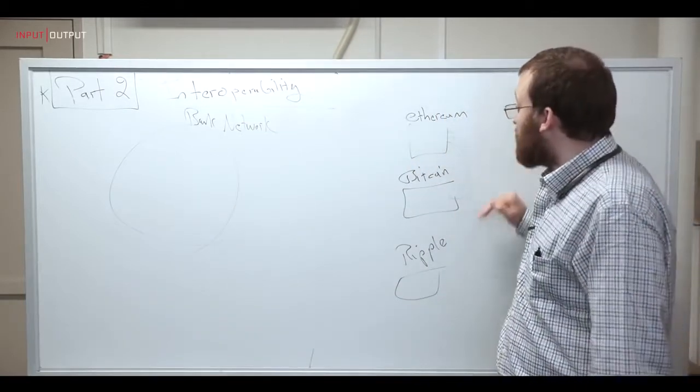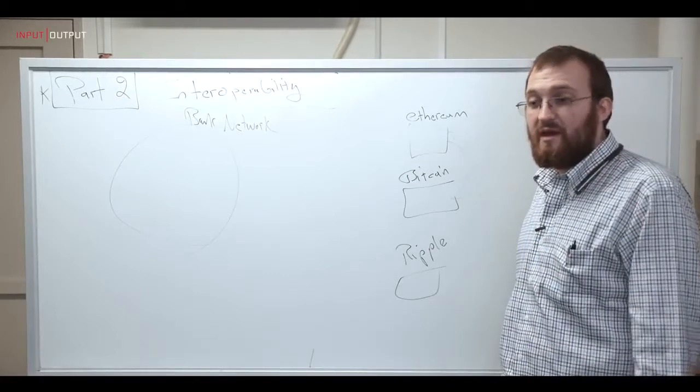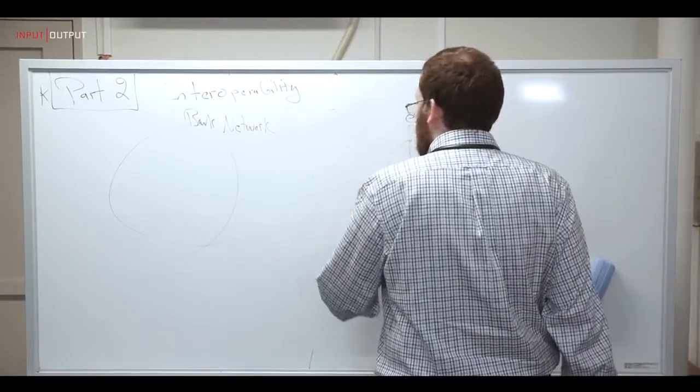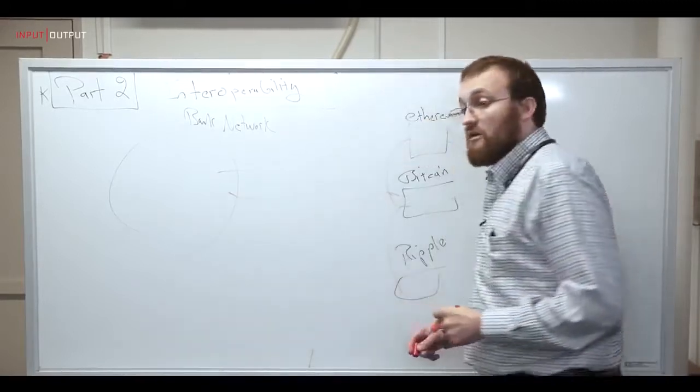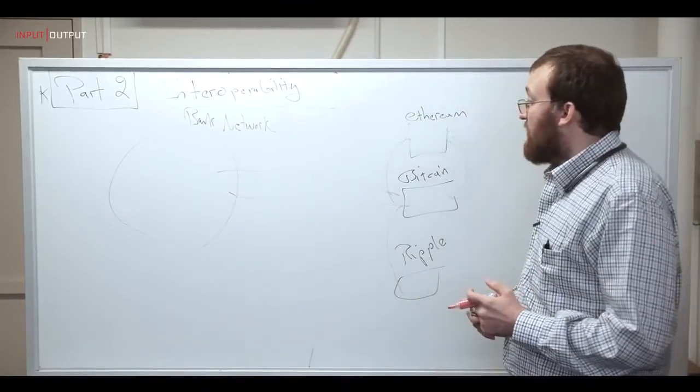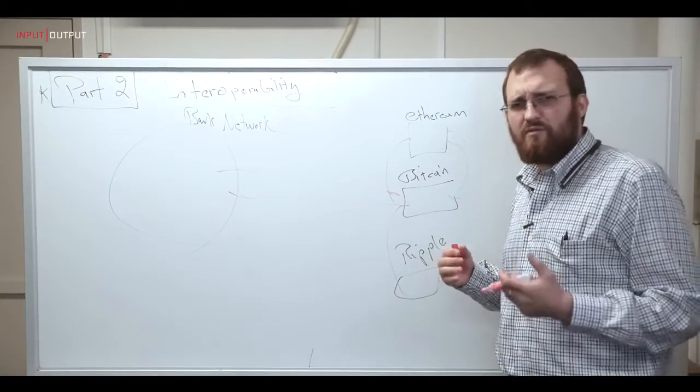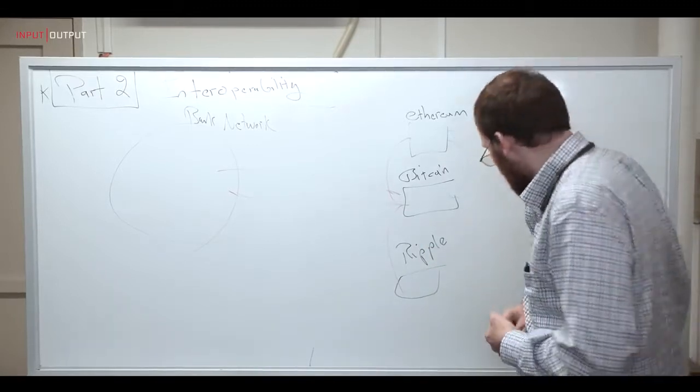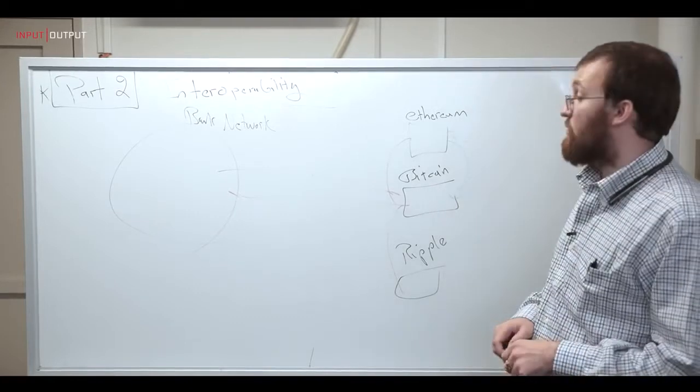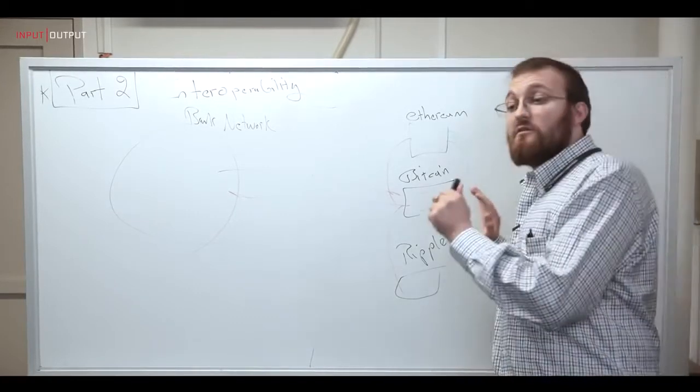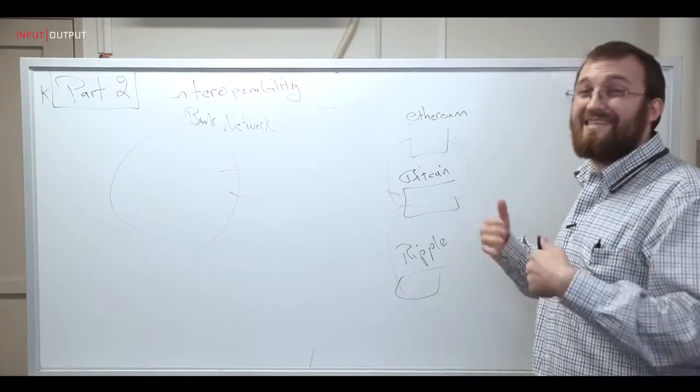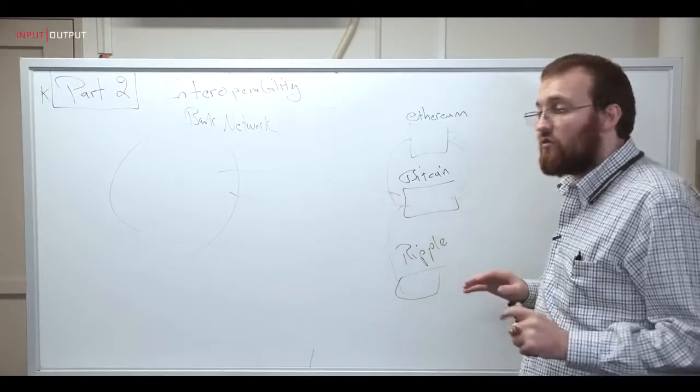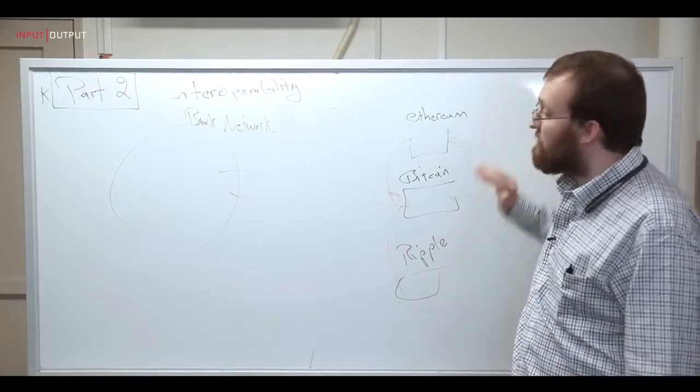So the problem is that if you don't have a single standard, and if you don't have a canonical way of communicating with these systems, then you run into a situation where value gets very fragmented. The kingmaker will be the small on and off-boarding hubs that control the movement of value between these systems. Currently we're seeing those as exchanges, and these exchanges are very fragile.